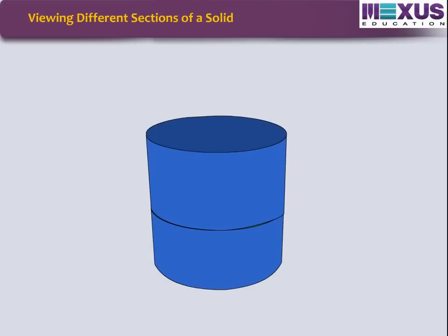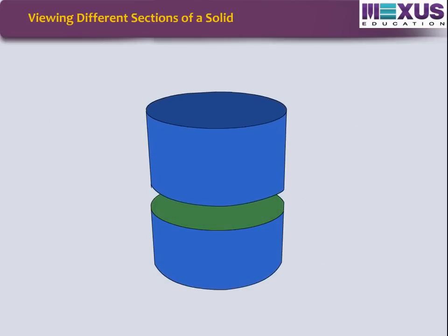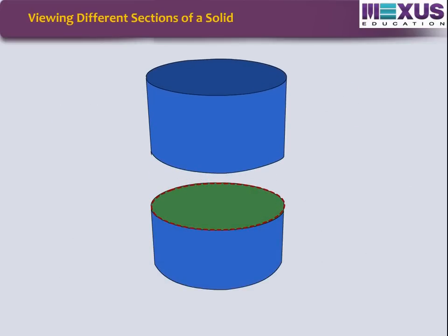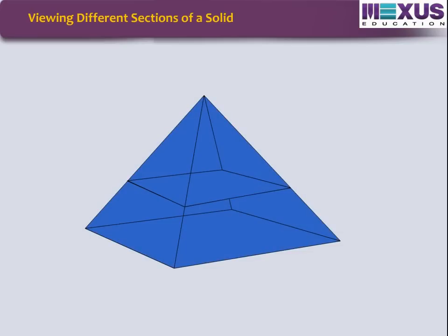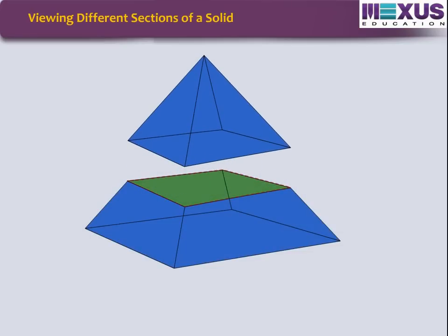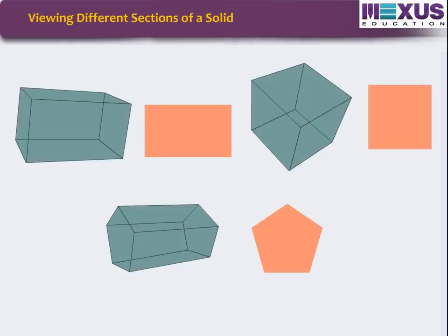For example, the cross section of a circular cylinder is a circle. The cross section of a rectangular pyramid is a rectangle. Let us see some more examples of cross section.